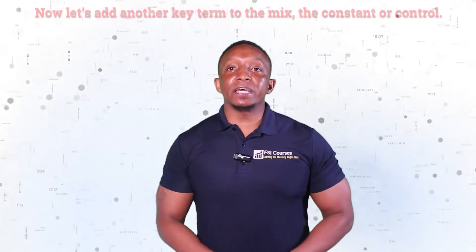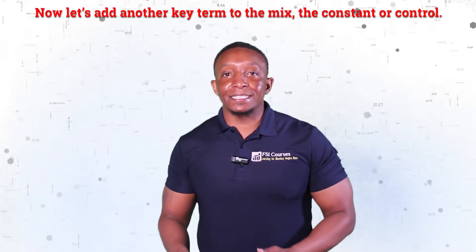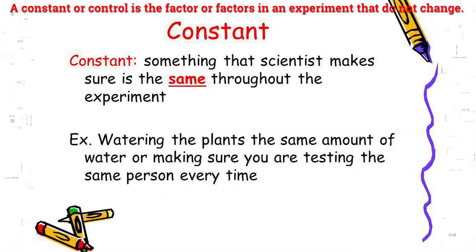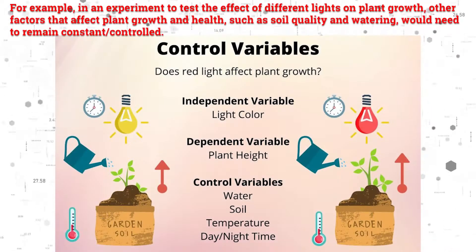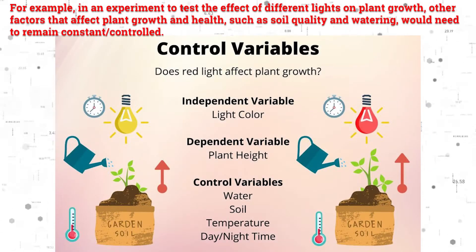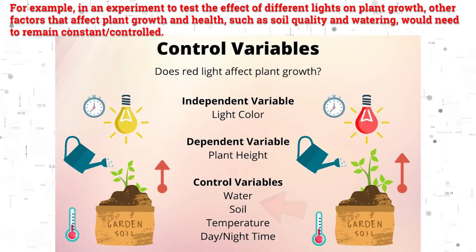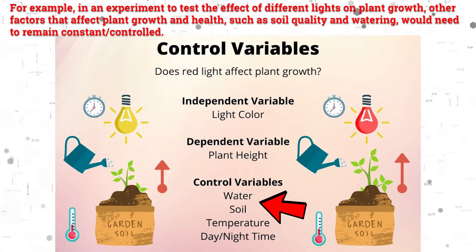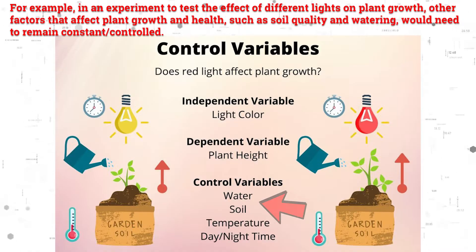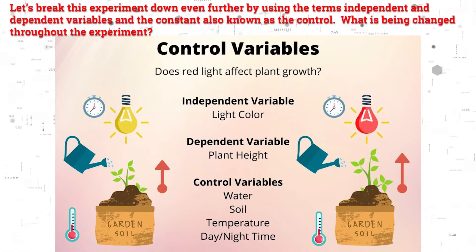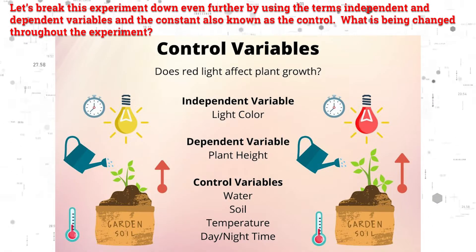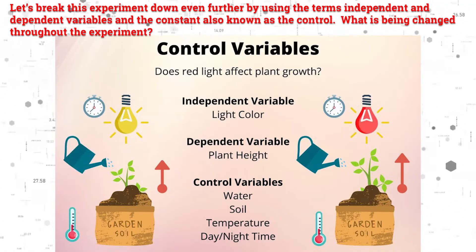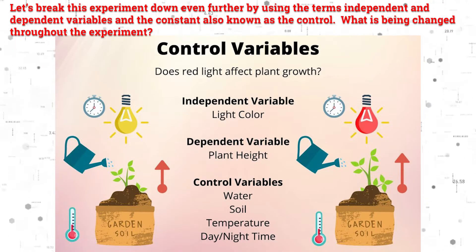Now let's add another key term to the mix: the constant or control. A constant or control is the factor or factors in an experiment that did not change. For example, in an experiment to test the effect of different lights on plant growth, other factors that affect plant growth and health — such as soil quality and watering — would need to remain constant. Let's break this experiment down further using the terms independent variable, dependent variable, and the constant, also known as the control.